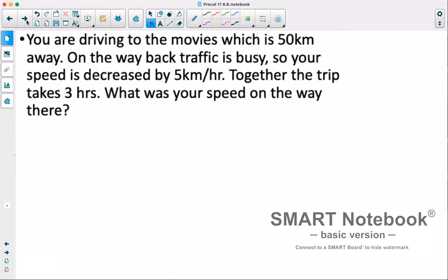One last example. You're driving to the movies, which is 50 kilometers away. On the way back, traffic is busy, so your speed is decreased by 5 kilometers an hour. Together, the trip takes 3 hours. What was your speed on the way there? I'll set this up like a table. However, it's a bit more complex of a question, so we'll have more information on our table. We have way there, way back, and total.